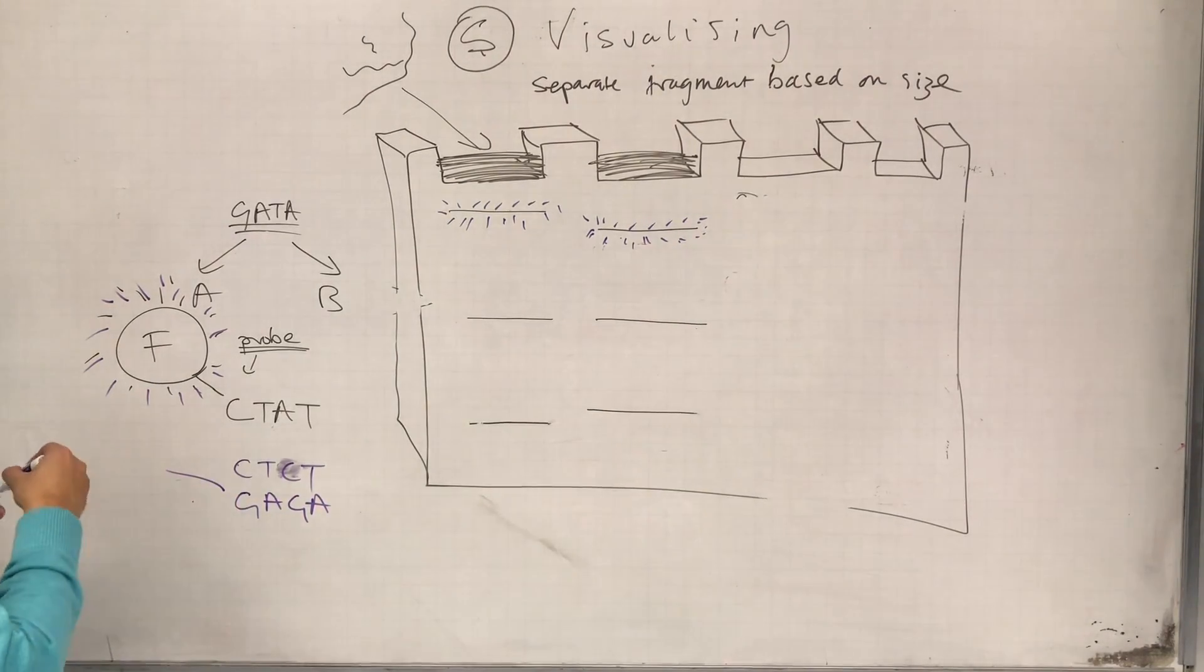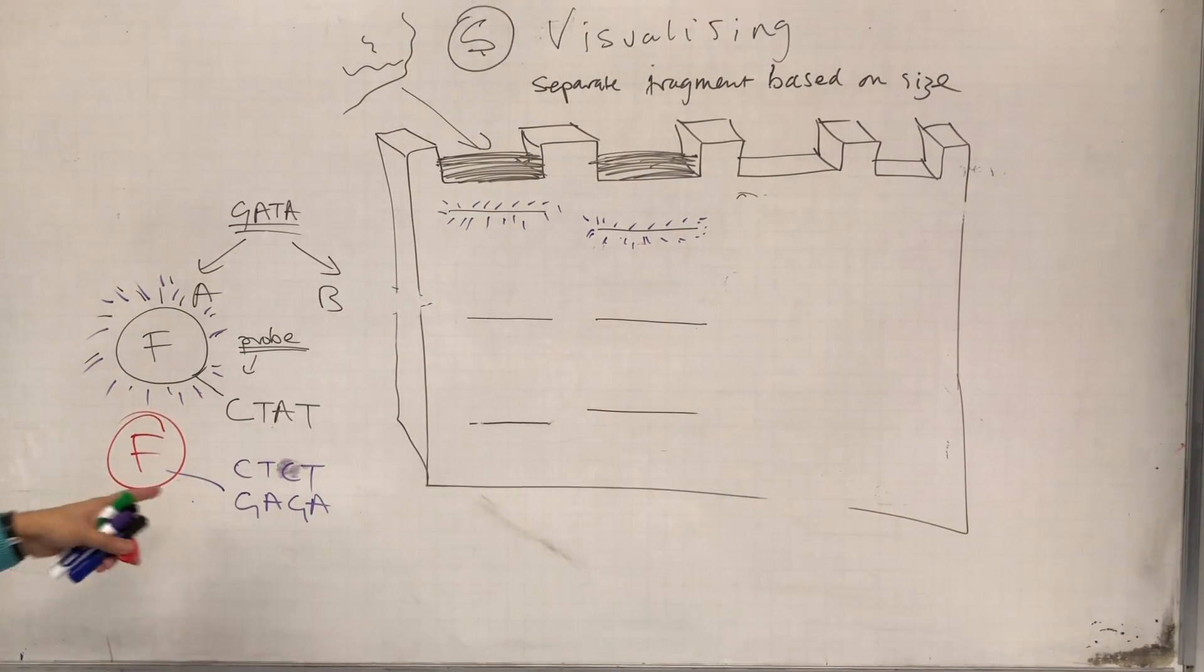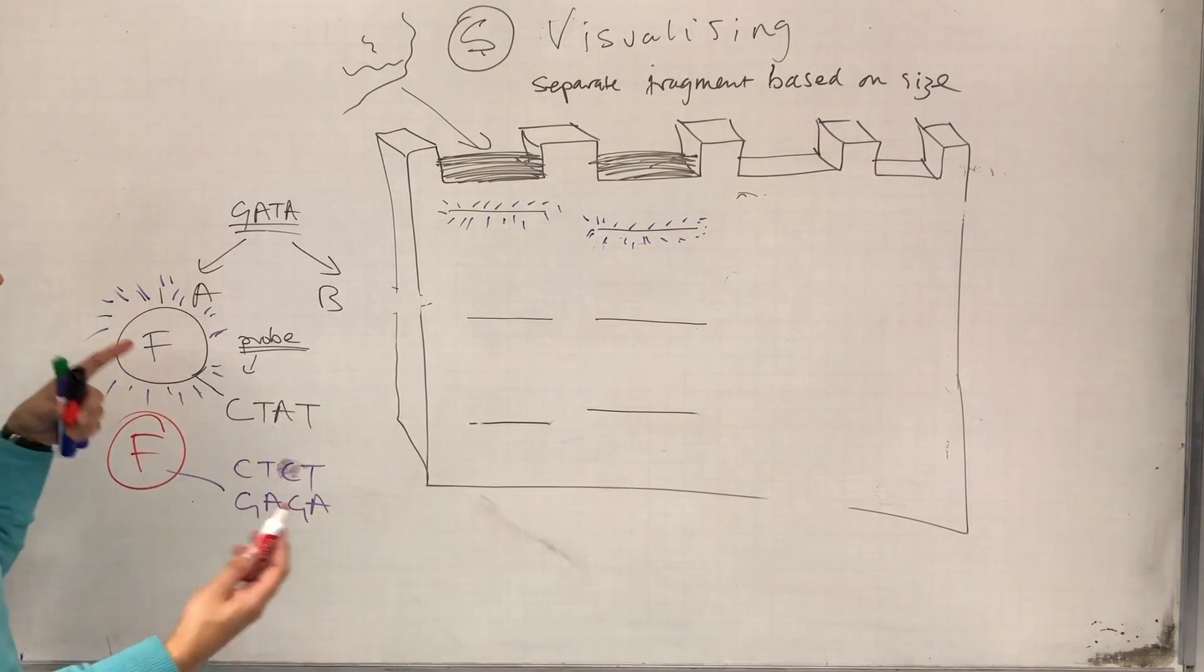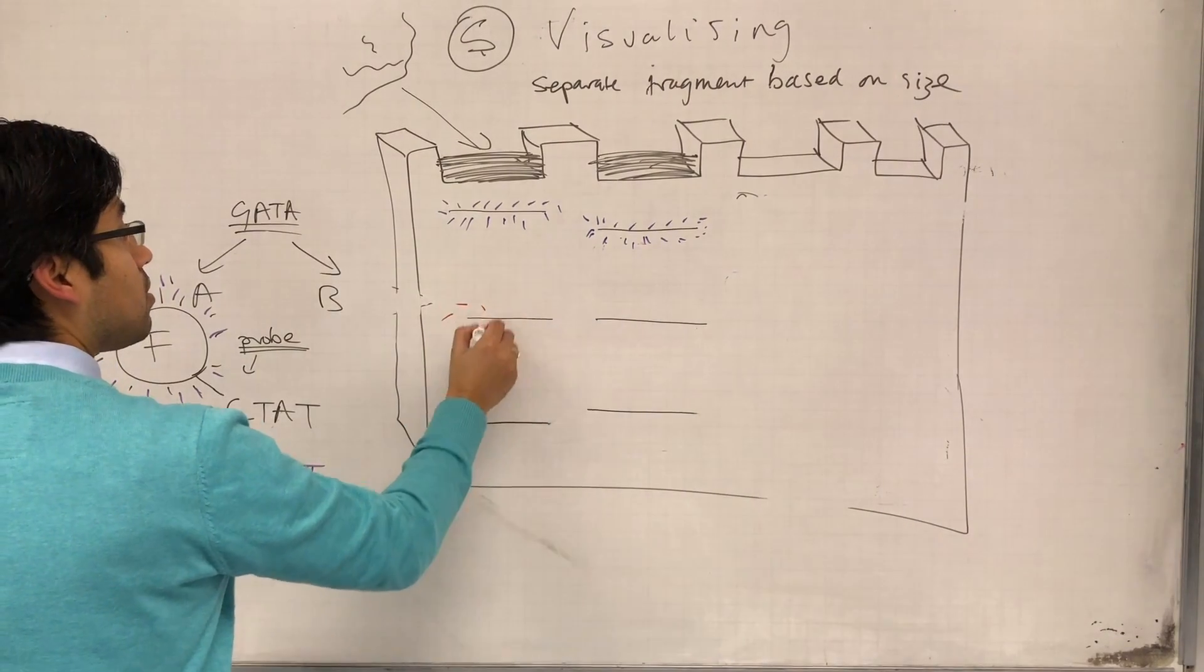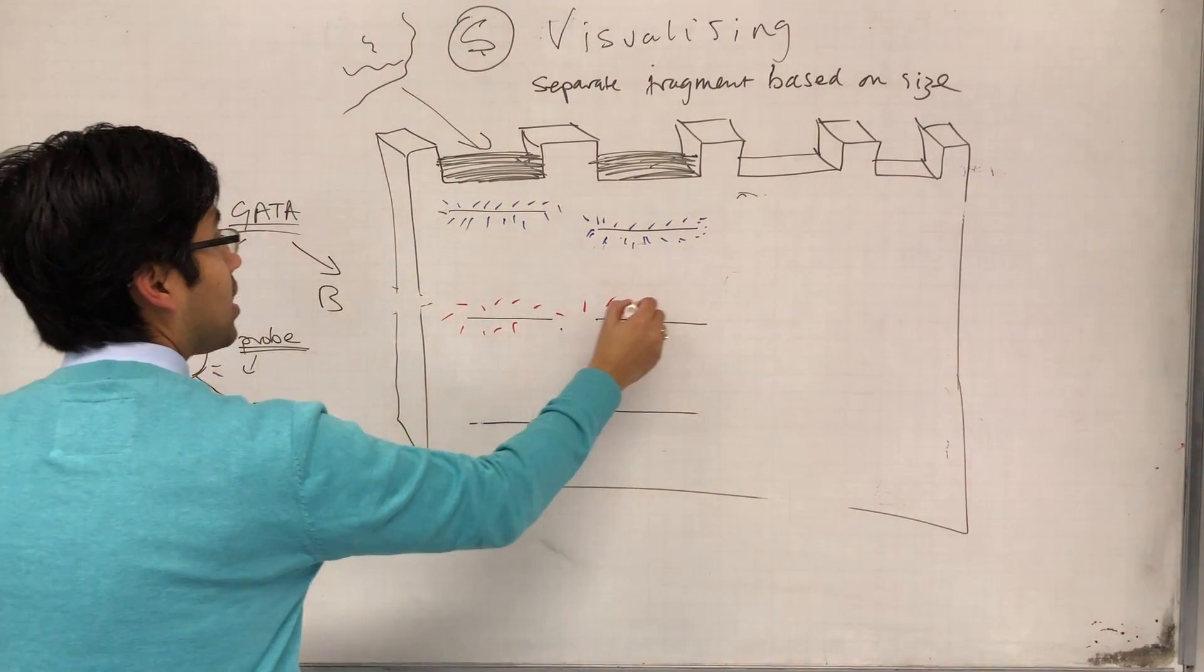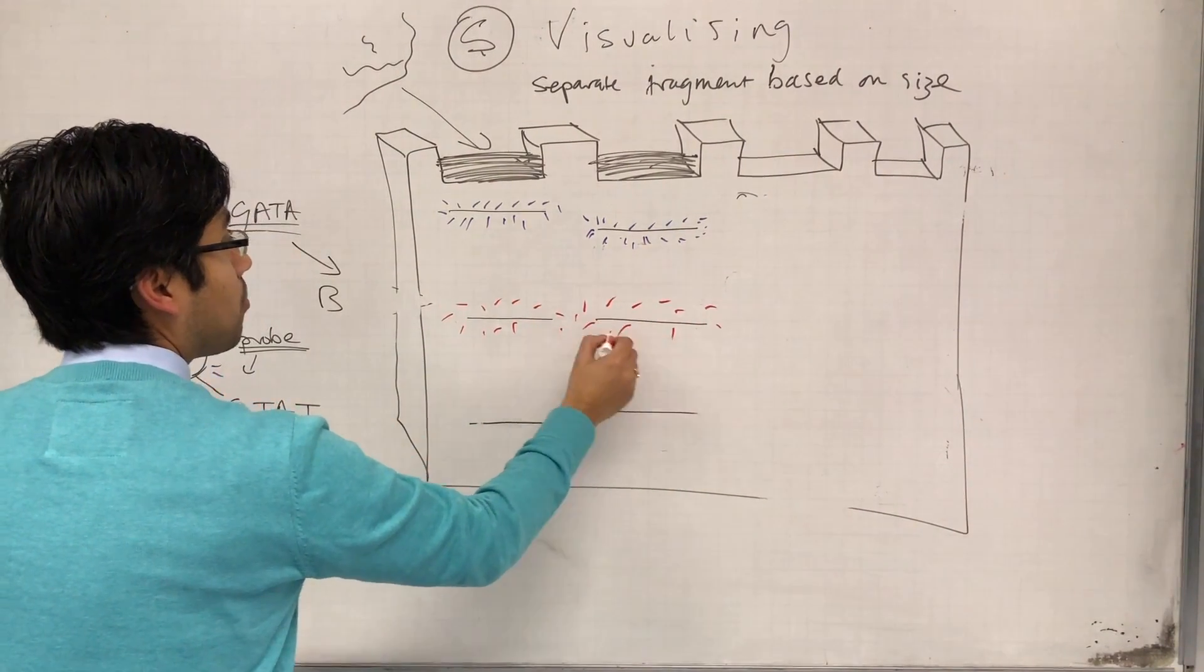And then I stick a different color fluorophore on this one. So this one's going to give me a red signal. Whenever this probe finds its sequence CTCT, it's going to give me a red signal. And then I get this from that.